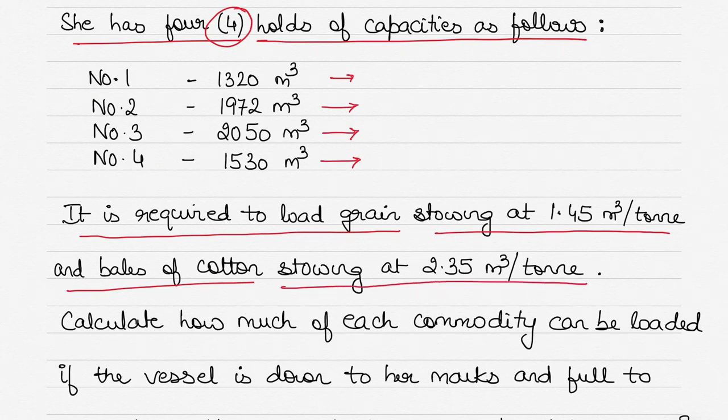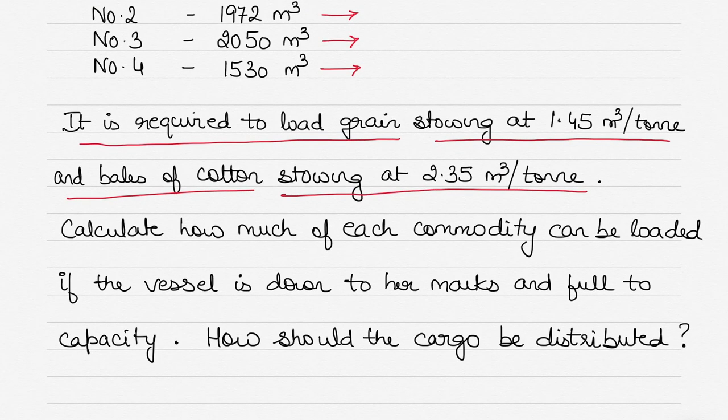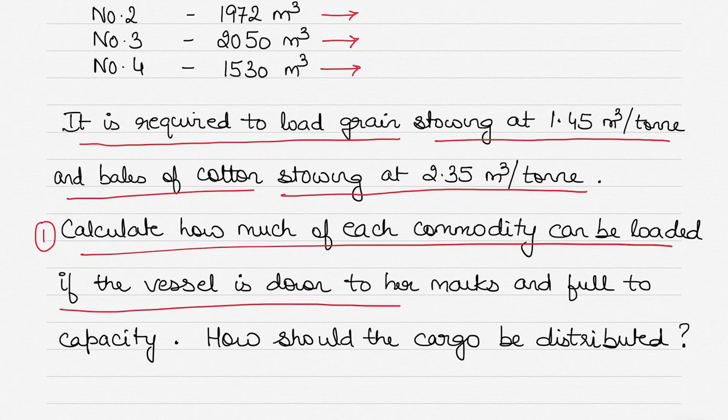You have to calculate two things. First, calculate how much of each commodity, that means how much of grain and how much bales of cotton can you load if the vessel is down to her marks and full to capacity.